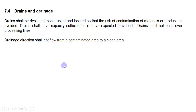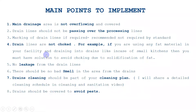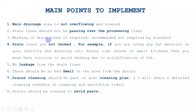Now I will describe clause 7.4, which is the last sub-clause of this PRP: drains and drainage. To comply, you must follow these points. First, the main drainage area should not be overflowing and should be covered. Second, drain lines should not pass over processing lines such as mixing areas or storage areas. Third, marking of drains - this is just my recommendation and not required by the standard.